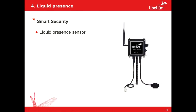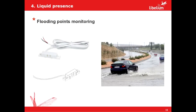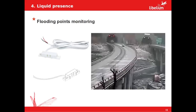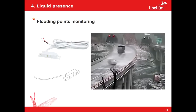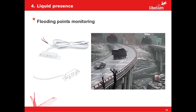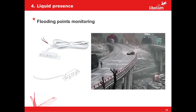Now we are going to move to the next application about liquid presence over the pavement. For that purpose we have the smart security line that includes the liquid presence sensor. This sensor permits us to control conflictive points due to floods. For example, in this video we can see a conflictive point at the exit of a tunnel due to the rainfall. We can appreciate how every vehicle has difficulties when they try to stop. Therefore, the poor condition of the road could be marked properly to try to avoid this type of accident.